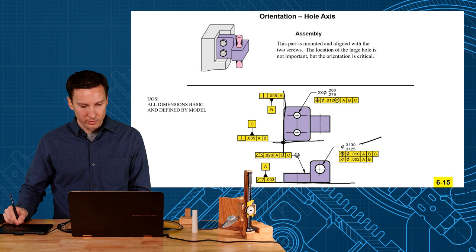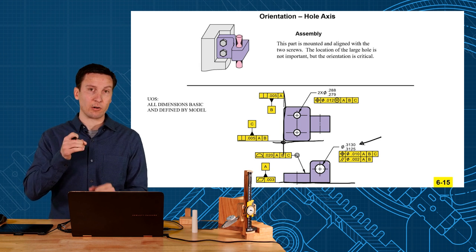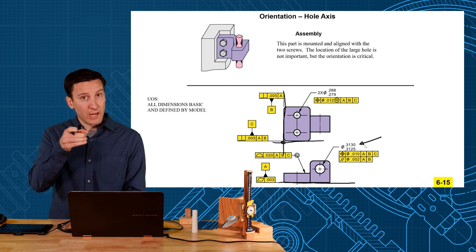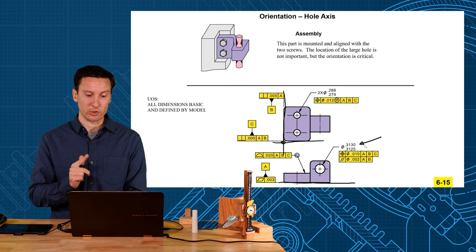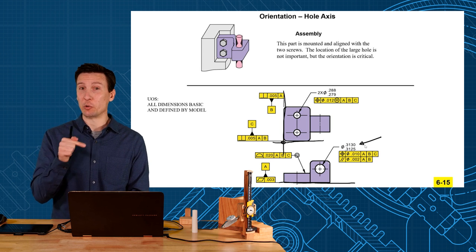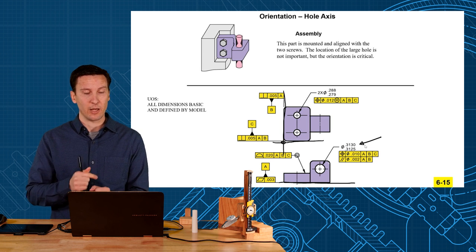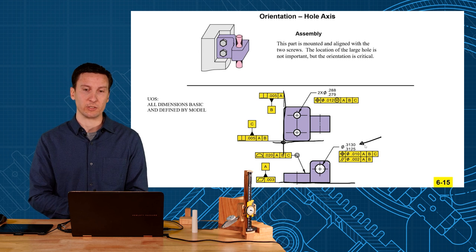Now this hole, the important one here, is given a tight size tolerance for the pin to press in, and then we have a bigger location tolerance, a position tolerance of 10 thou, and then a tighter orientation. Because this hole is at zero degrees relative to the datum features, we're going to use parallelism to control its orientation.